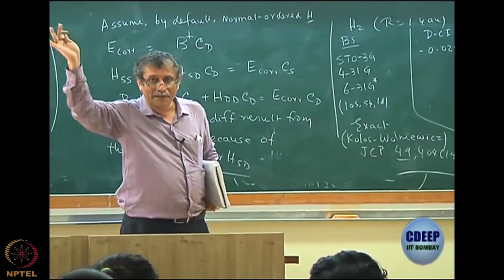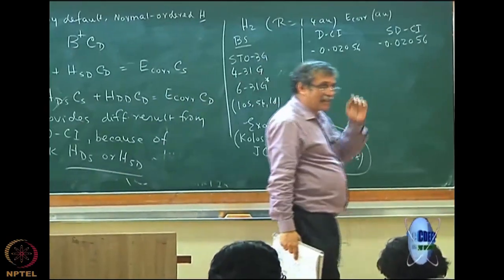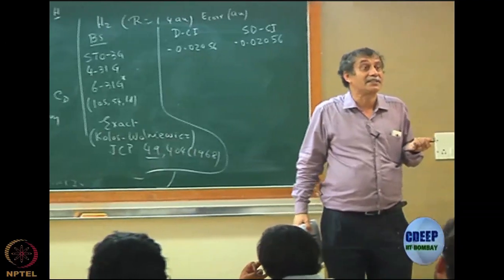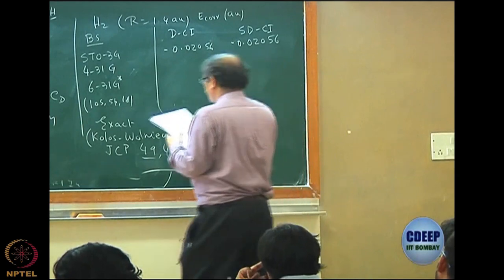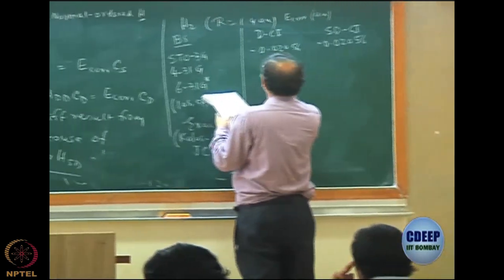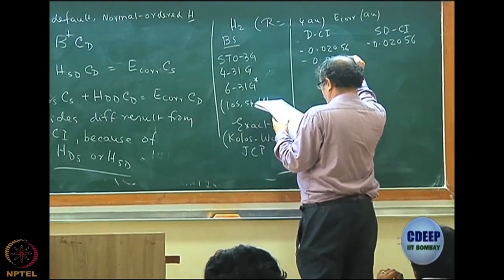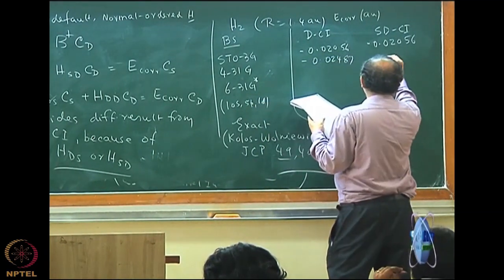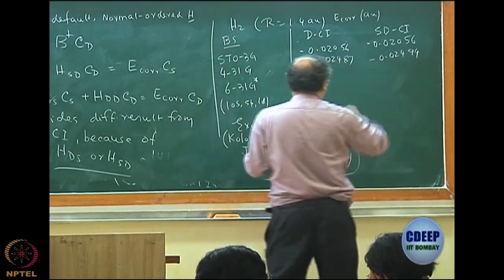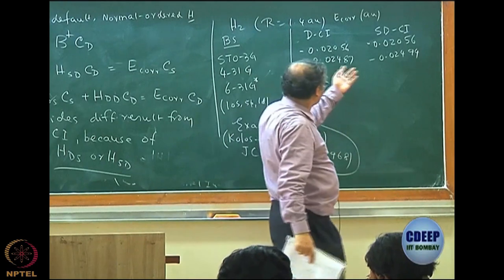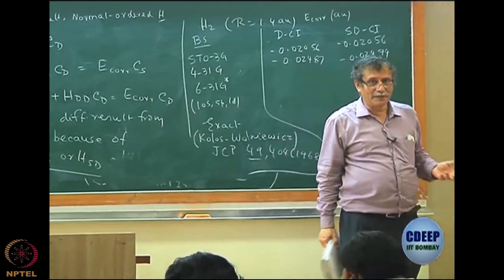This shows that DCI and SDCI do not really distinguish the correlation energy in the STO-3G basis. That is why I am showing basis set effects. At 4-31G, the value is −0.02487 for both DCI and SDCI, which is reasonably larger. The contribution of singles is still very small — only at the fifth digit.